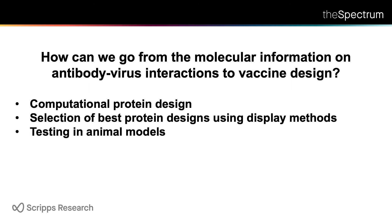This gives us the molecular shape information, and now we want to turn that into vaccine design. We've developed procedures — particularly Bill Schief at Scripps has led this work. Basically we have an approach: we start out with structural information, use computational design, then select the best designs using display methods. We've also developed animal models that allow us to test how well these candidates will work.